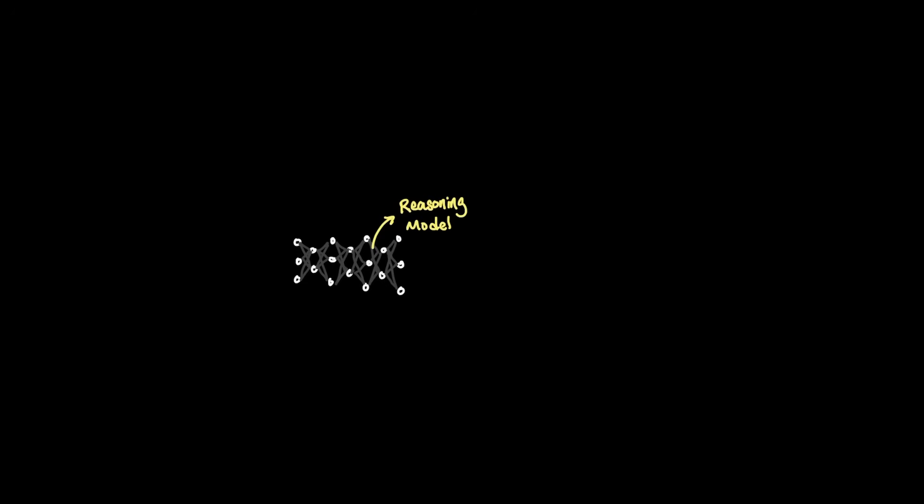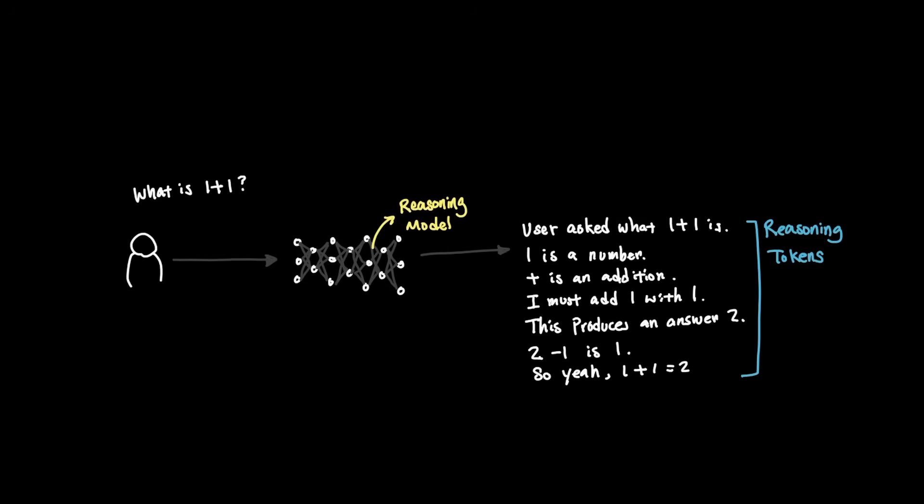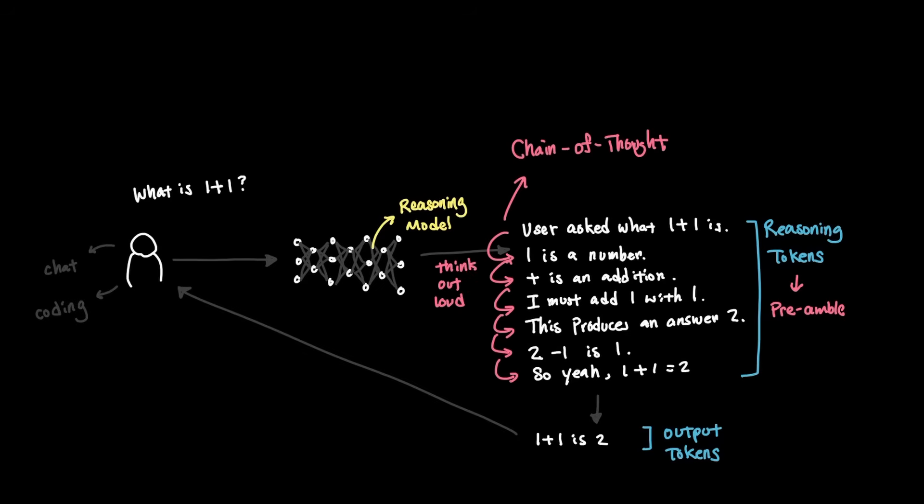Let's do a quick review on how reasoning models work. Reasoning models produce a series of reasoning tokens before they actually generate output tokens that we see in our application, whether it's chat or coding. And these reasoning tokens act as a preamble that essentially allow the models to think out loud in a chain of thought.